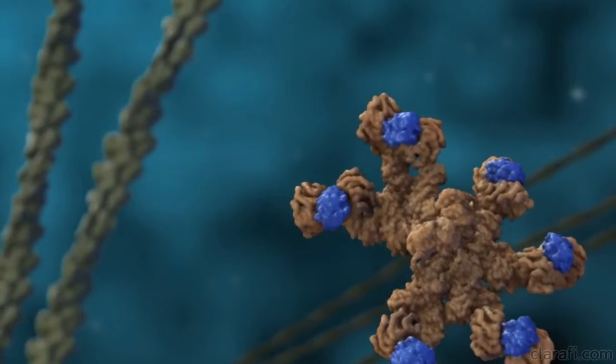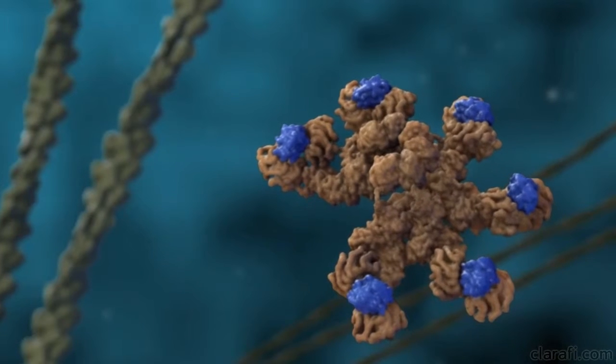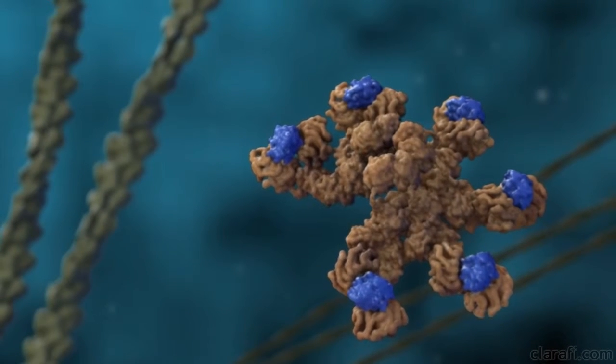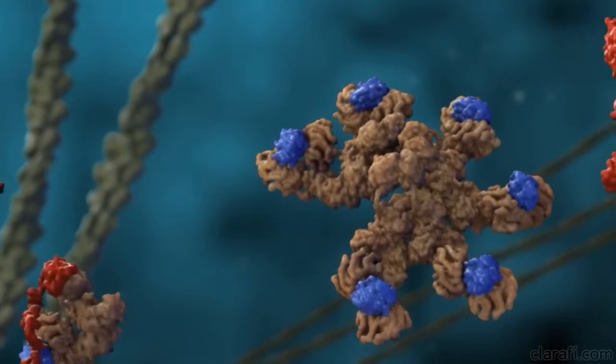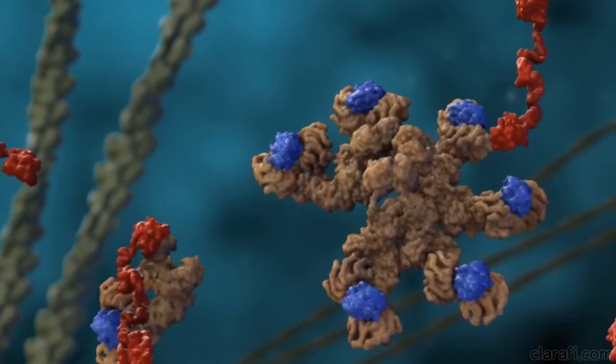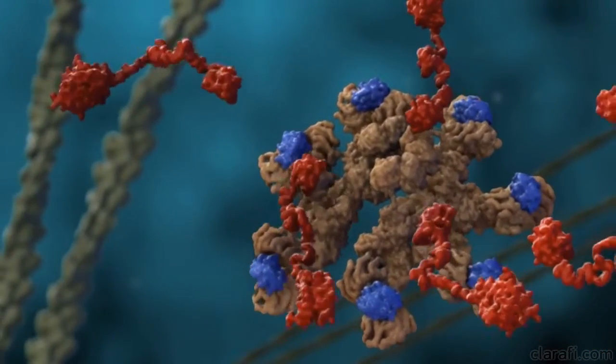In most scientific visualizations and existing diagrams, caspase 9 is almost always depicted as binding to APAP1 after the base of the apoptosome forms. There's no evidence, however, to suggest that caspase 9 must wait for the apoptosome base to form before it can bind, so we chose to depict both scenarios in our animation.